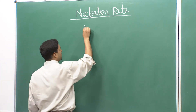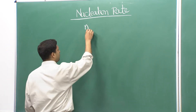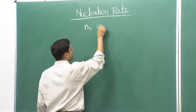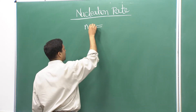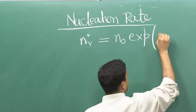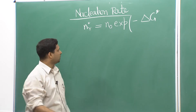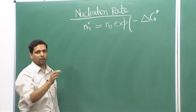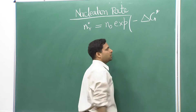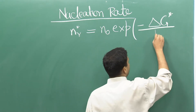We get back to the same equation. Let r* be the critical radius. If we want to find how many clusters of that size can be found, we can write n(r*) = n₀ exp(−ΔG*/kT). Here n(r*) is the number of clusters of that critical size r*, and ΔG* is the free energy change for the formation of that critical-size nucleus divided by kT.